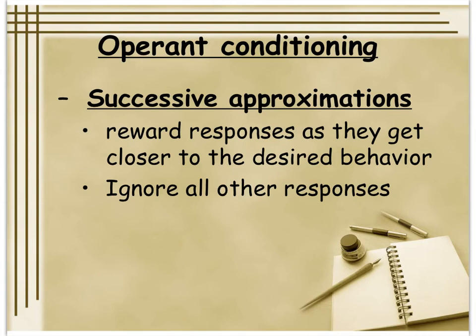There's also the discriminative stimulus — a cue that leads someone to know whether or not a behavior will pay off. A dog learns 'good girl' means it can eat something. You learn red light means stop and green light means go. You're likely to answer your phone only when it's ringing. A small child will know to ask grandparents for toys rather than parents, because grandparents are more likely to say yes — that's a discriminative stimulus: knowing who to ask for what.